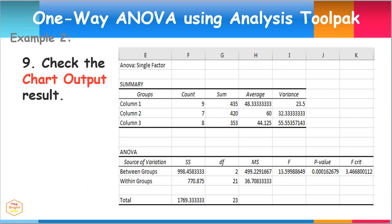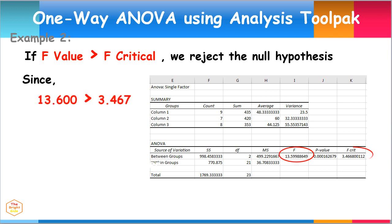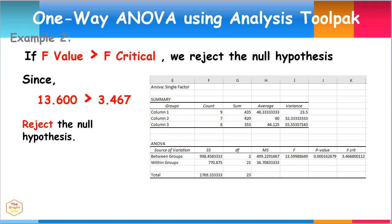Check out the chart output results for the single factor ANOVA. Here we are provided the mean and variances for both variables. Also, there are results for the F-value, F-critical, and P-value. The decision rule is: if the F-value is greater than F-critical, we reject the null hypothesis. Since 13.600 is greater than 3.467, therefore we reject the null hypothesis. We can conclude that the means of the three populations are not equal, and at least one of the means differs significantly.